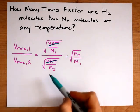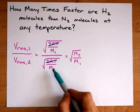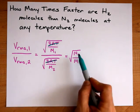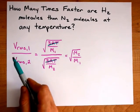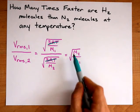Here we actually end up dividing a fraction by a fraction, and the M2 flips to the numerator. So the ratio of the RMS speeds is the square root of the ratio of the molar masses.